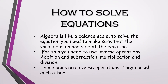Now that we know what equations, expressions, and terms are, I will tell you how to solve an equation. To solve an equation, you need to undo it. Algebra is like a balance scale. You need to make sure that the variable is on one side of the equation and the expressions are on the other side. If you do anything on one side of a balance scale, you need to do the same thing to the other side to maintain the balance. The same goes with equations.